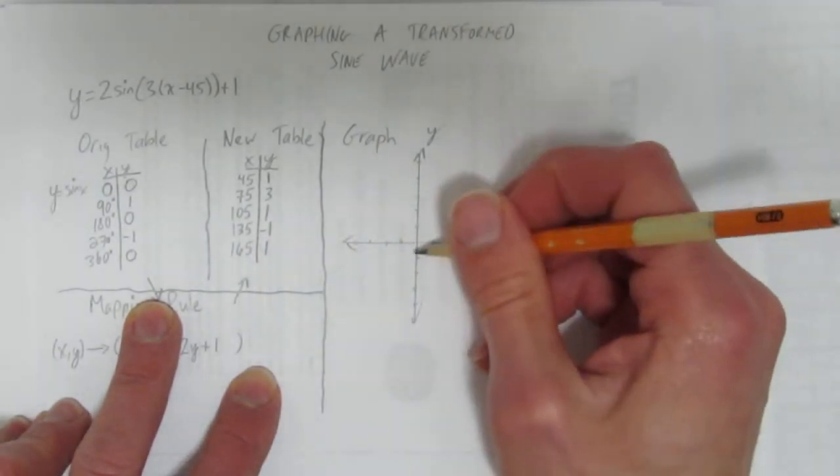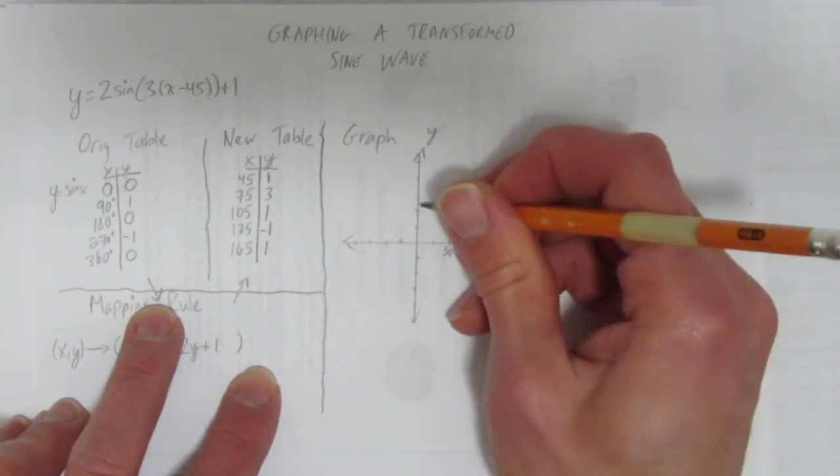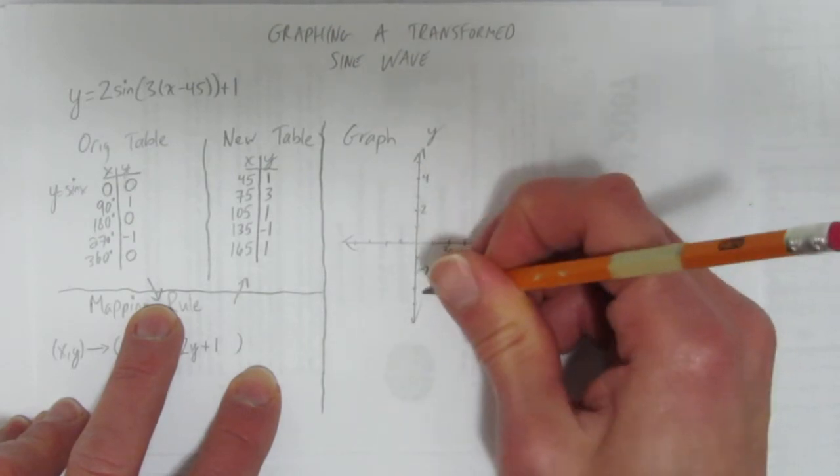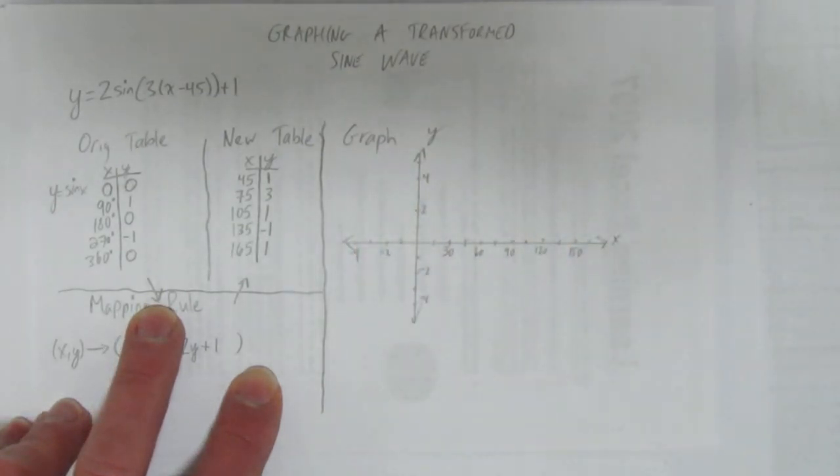The scale on the y-axis will be different. I only have to go up to 3 and down to negative 1. So, I'm going to go by 1's. I'll label every second tick. Here's 2, 4, negative 2, negative 4. Here's negative 2, negative 4. Okay.